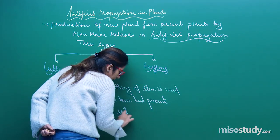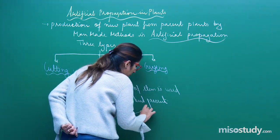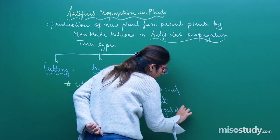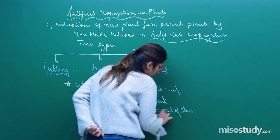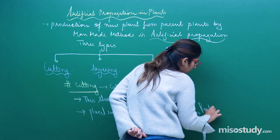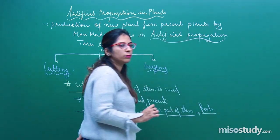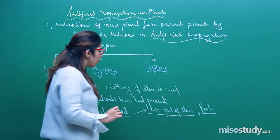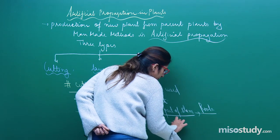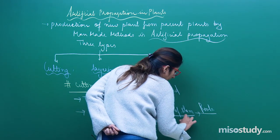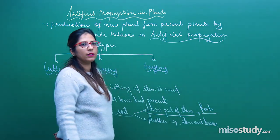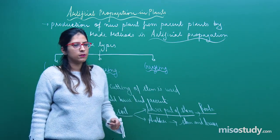What will happen is that the lower part of the stem will form roots, and those roots will grow and form various fine branches, which are useful for the absorption of water and minerals. The upper part will form your stem, leaves, and further modification will occur — flowers and fruits are also formed.